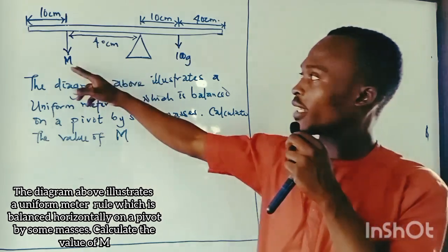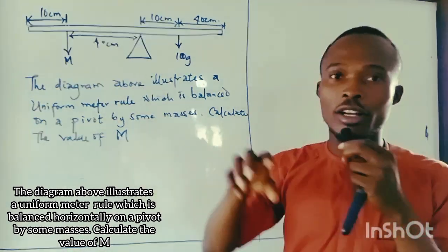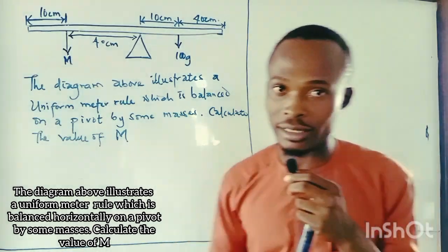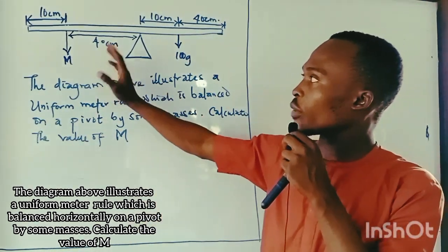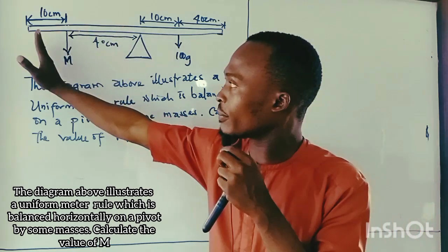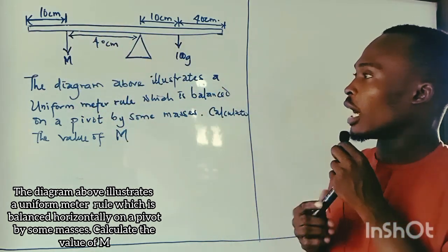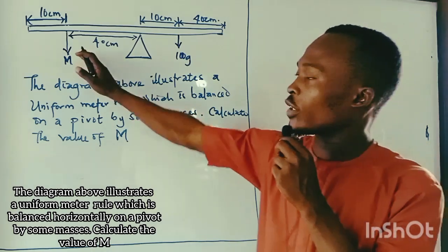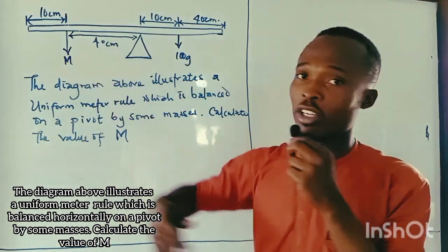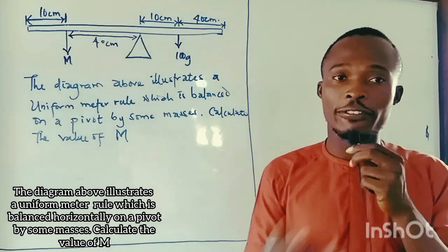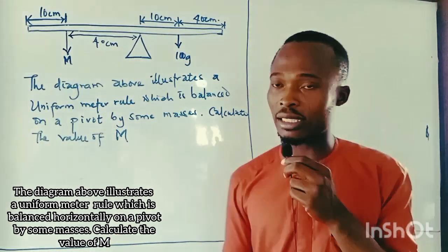To find this mass, we need to understand that clockwise moment is equal to anticlockwise moment. We calculate the moment of one side and equalize it to the moment of the other side. The moment of an object is the force of that object multiplied by its perpendicular distance.